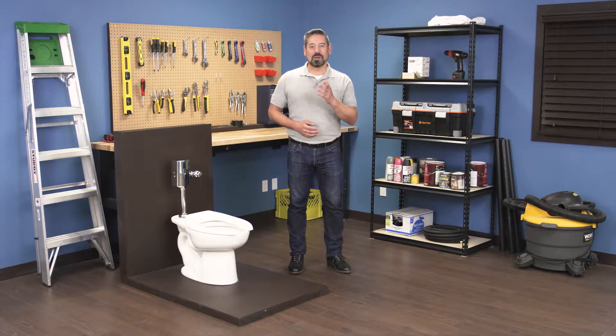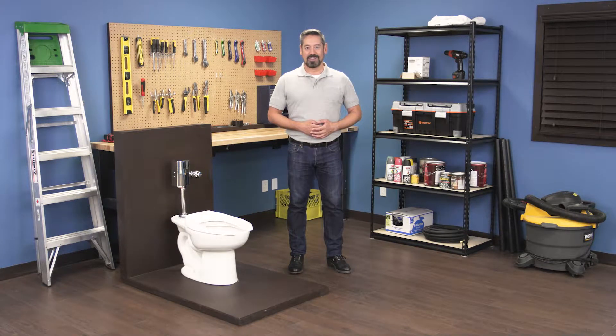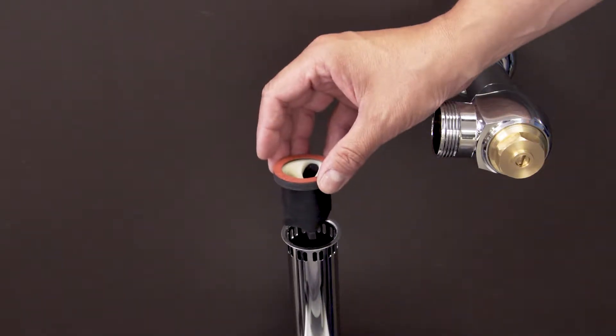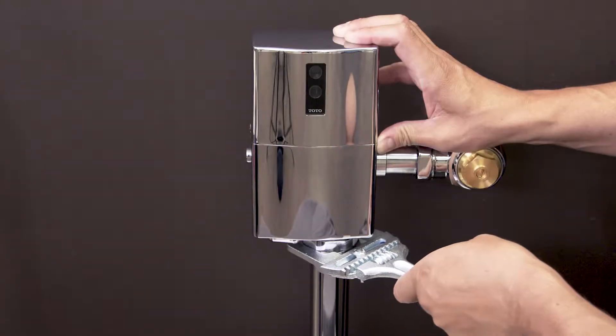Hi, I'm Vance and welcome back to Repair and Replace. In this episode I'll show you how to replace the vacuum breaker in a Toto EcoPower flushometer.